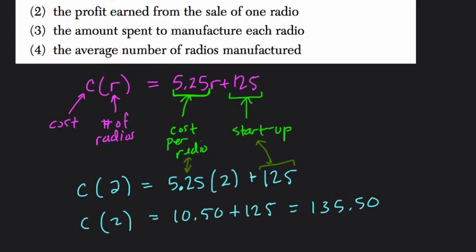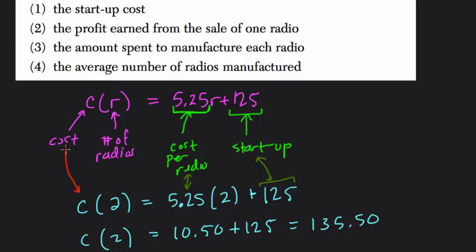And then, therefore, now we can conclude that c, especially looking at this example right here in each case, is the cost of everything, the startup and the cost per radio. It's the total cost. So here, the $135.50 is your total cost of operation, startup and cost per radio.